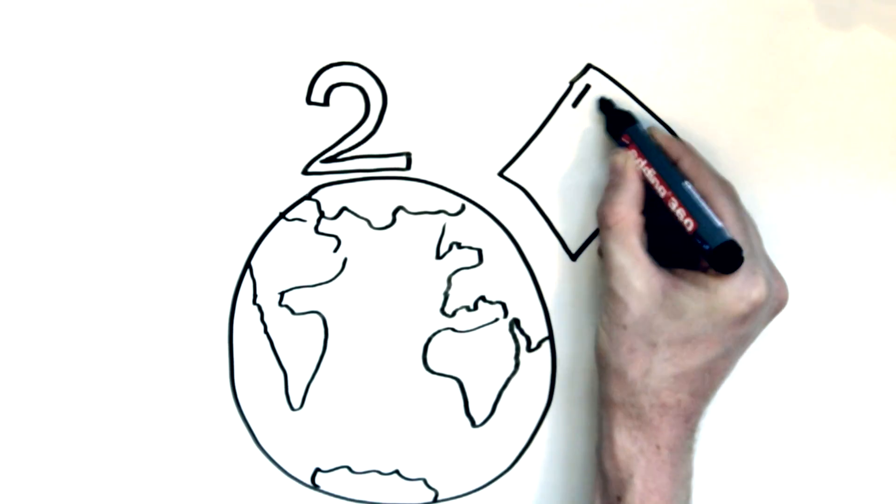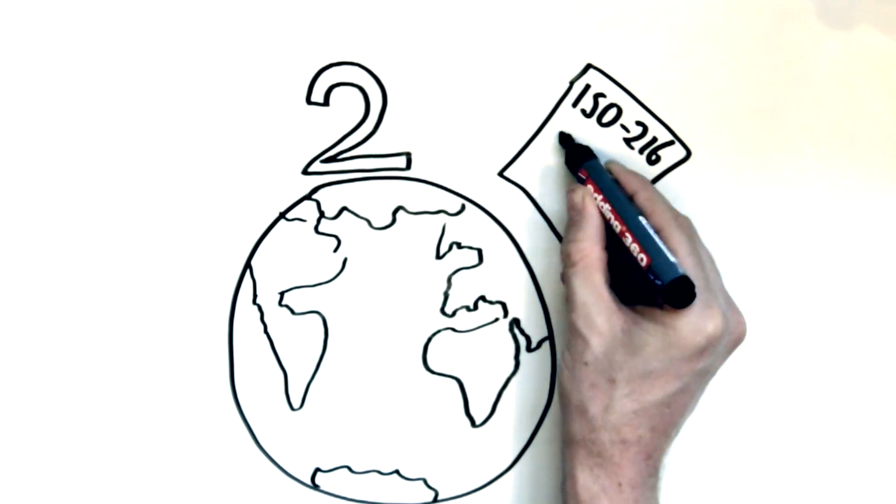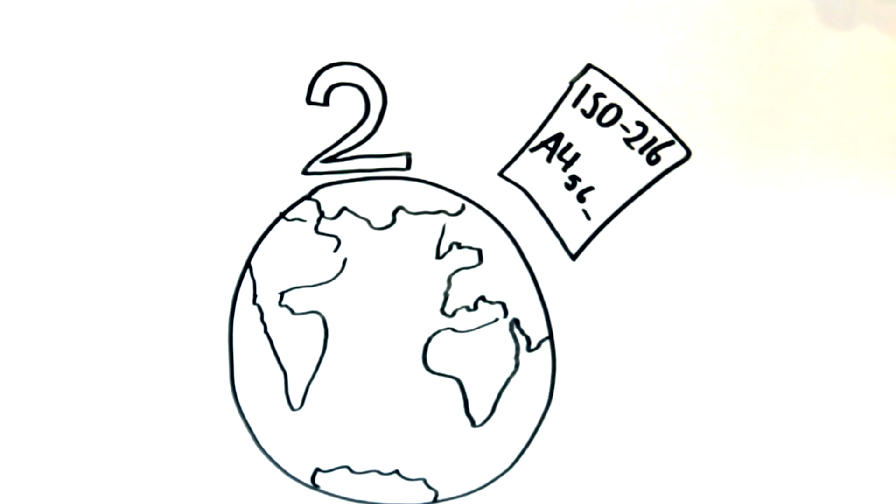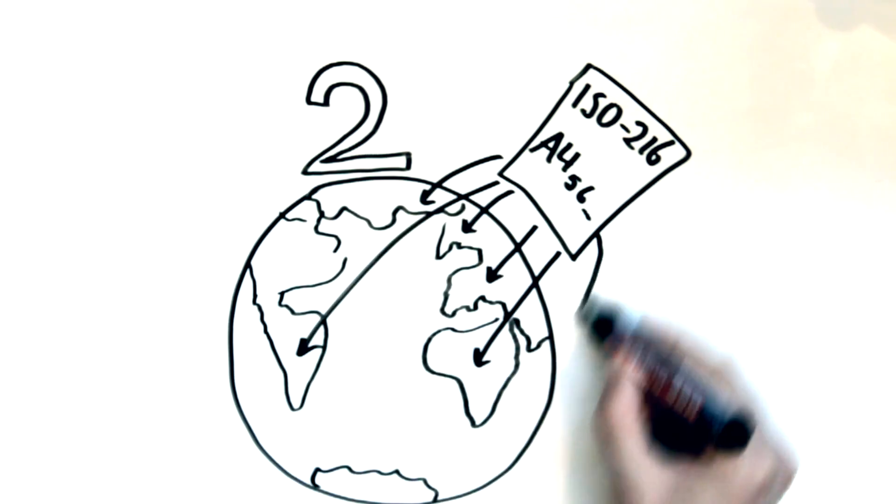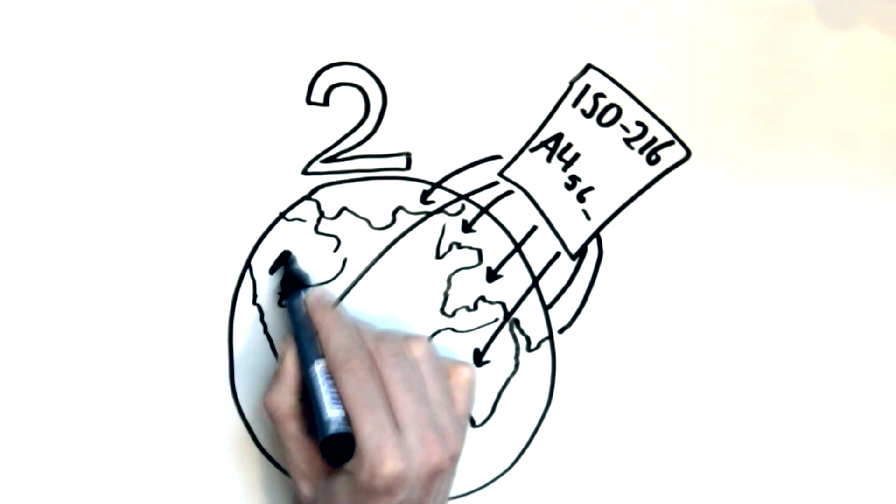First there is ISO 216 or more commonly known as the A series as in A4, A5, A6. This system is used all over the world with some exceptions, the main being the United States of America.